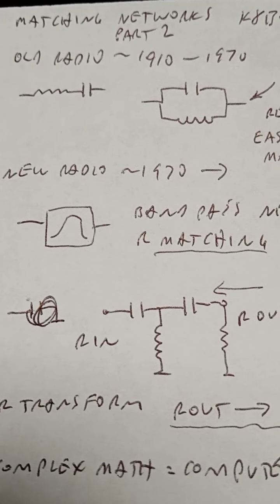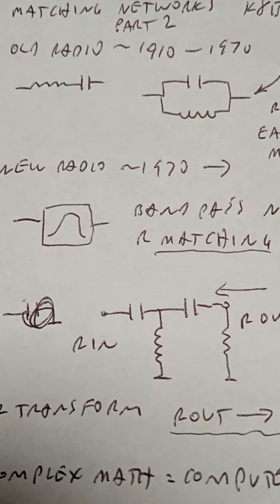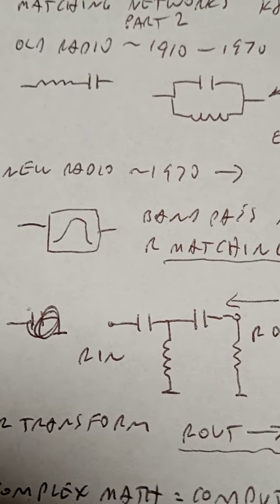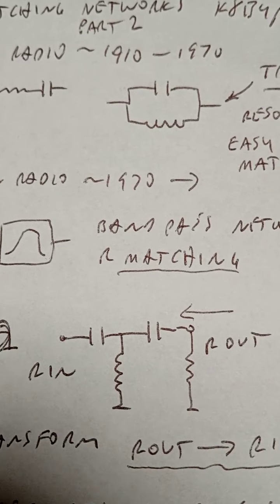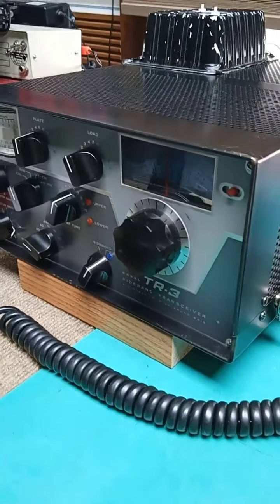Okay, KBYP with part two of tuning and matching networks. In the first video, I showed the difference between a tuned circuit, which is resonant series or parallel. That's old radio from about the 1910s up to about 1970, and that's the technology that is mostly in the TR3.